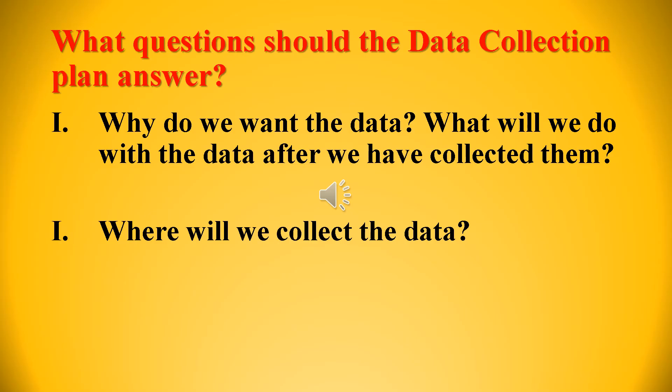First, refer to the flowchart drawn for both the current state of the process and the modified situation. Focus on the steps of the process where the quality characteristics you aim to improve are located. You must collect data twice: first, collect baseline data before you make any changes to the process so you have something to compare against; then, collect data after the changes and modification. Now you have two sets of data — before the improvement and after the improvement — which makes it very easy to compare.